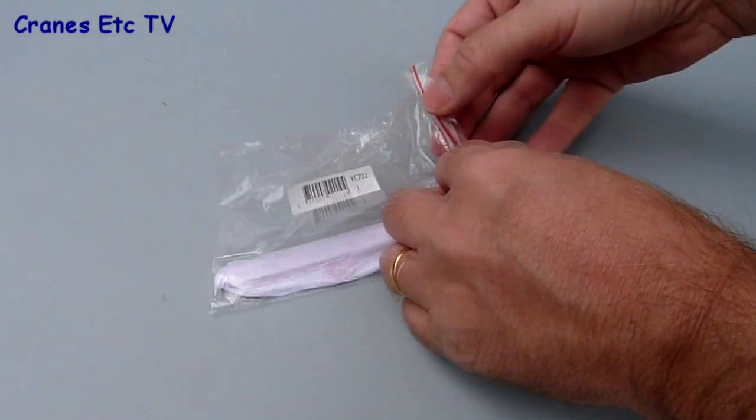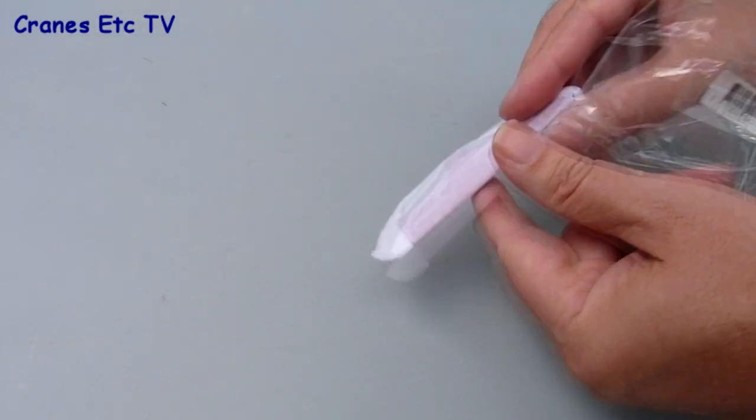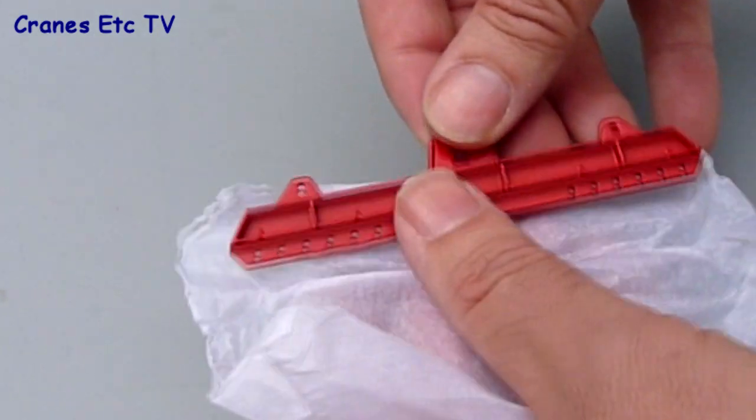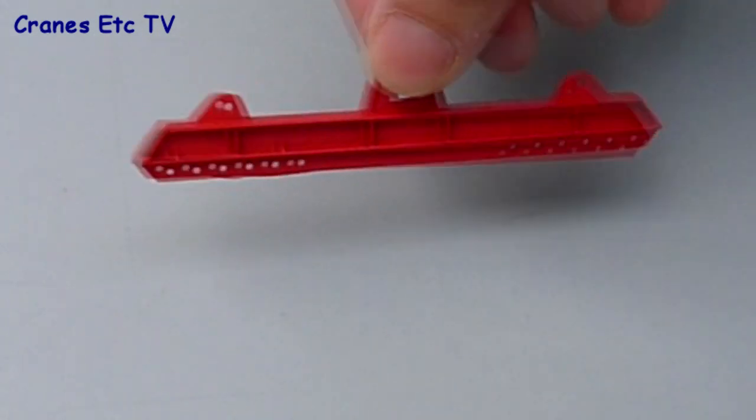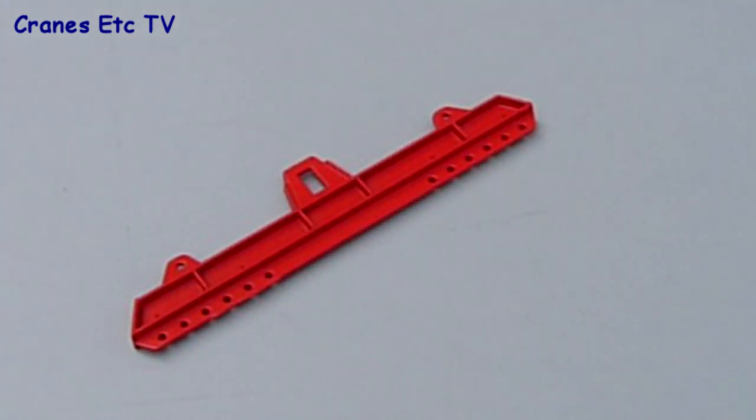The lifting beam arrives in the simplest of packaging, just a plastic bag. Inside, the beam is wrapped in tissue paper and it is quite a nicely made item with some good detail and a nice matte paint finish which looks pretty good when you see it in the flesh.